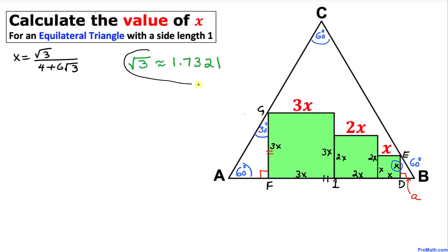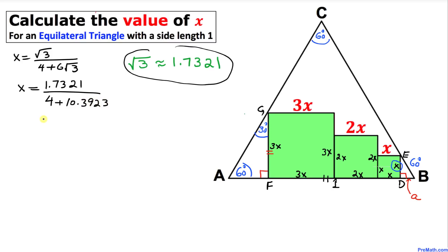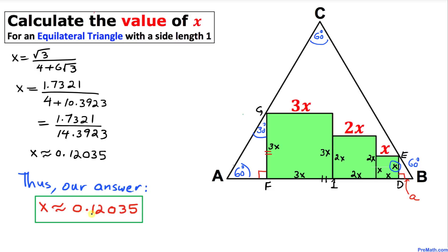Since √3 ≈ 1.7321, we substitute: x = 1.7321 / (4 + 6 × 1.7321) = 1.7321 / (4 + 10.3923) = 1.7321 / 14.3923. Therefore x is approximately equal to 0.12035. That is our final answer.